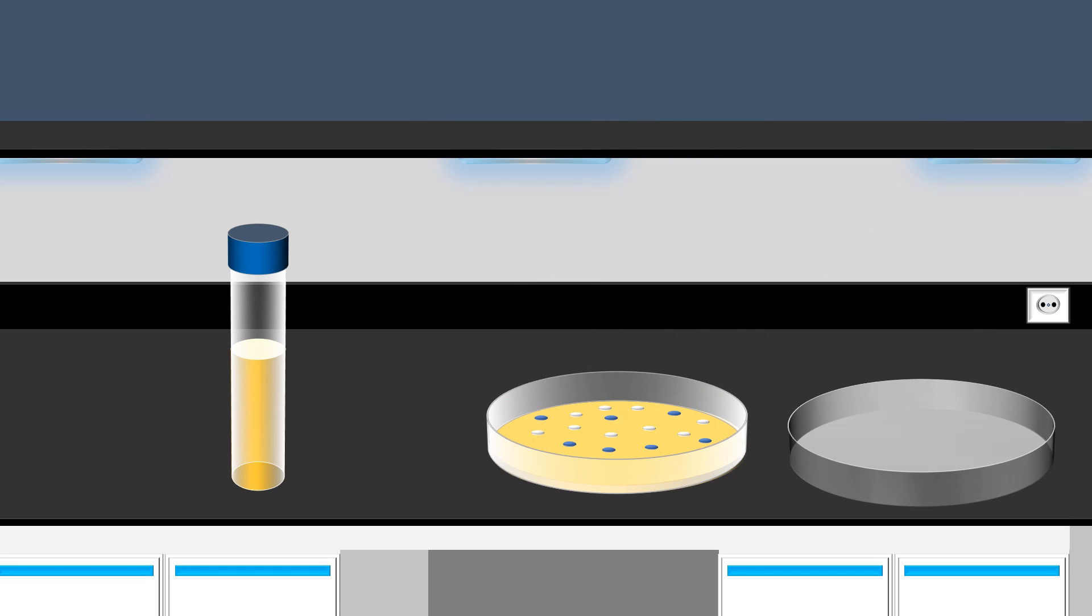Next, the white colonies, representing transformed bacterial cells with the recombinant vector, are isolated and transferred to an enriched culture medium, using an inoculation loop.